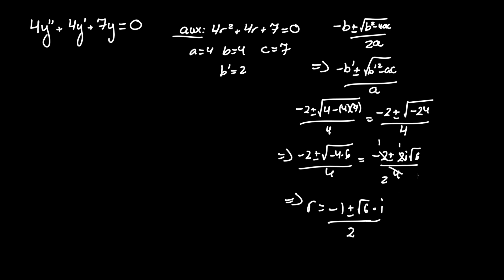Now you're wondering why I flipped the terms radical 6 and i around. It's because when we end up in a situation where r is complex, we need to find the general form r equals alpha plus minus beta i.